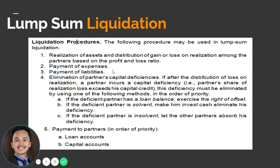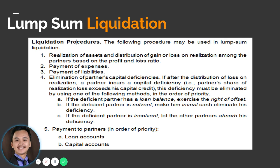In lump sum liquidation, there are five steps to follow. First, realization of assets and distribution of gain or loss on realization among the partners based on the profit and loss ratio. The first step is the conversion — selling your non-cash assets to a third party — and the accompanying gain or loss from that realization will be distributed to the partners using the profit and loss ratio. The second step is payment of expenses from the liquidation process. Whatever expense is incurred throughout the liquidation process will also be distributed to the partners using the profit and loss ratio.